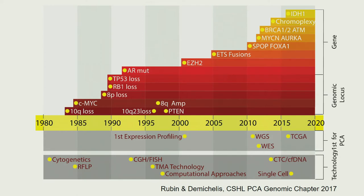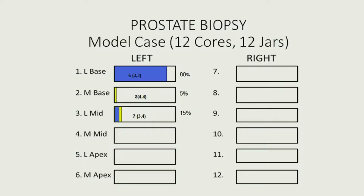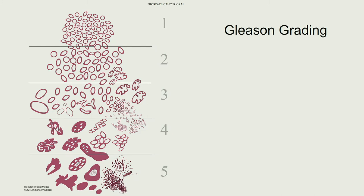Unlike lung cancer, where we have many molecular diagnostic tests, it's been much more challenging in prostate cancer. In clinically localized disease, one of the challenges is we're taking samples of a tumor at early stages. We can have all sorts of scenarios where you have a lot of tumor — it might be Gleason 6 — and then moving all the way to higher grades, but you may only have a very small amount of that tumor.